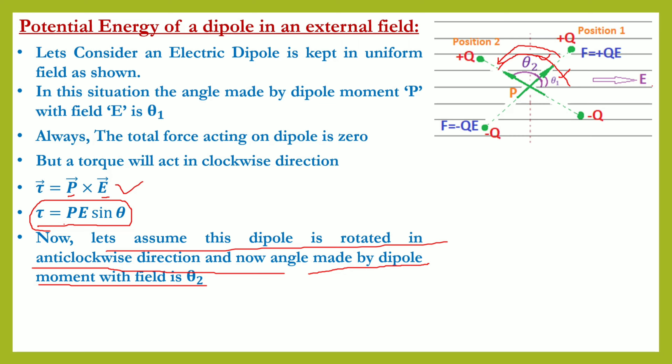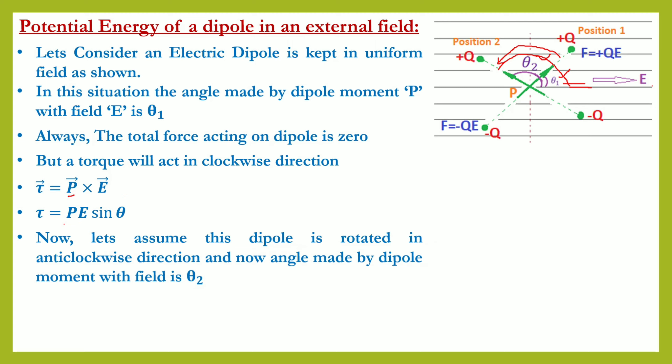The dipole is rotated anticlockwise from position 1 (angle theta 1) to position 2 (angle theta 2), both measured from the direction of the electric field. This rotation is against the natural tendency (clockwise), so it can only happen by applying an external force. The tendency of rotation was clockwise and we are rotating it anticlockwise — they are opposite. Now we need to calculate the work done in this rotation process.